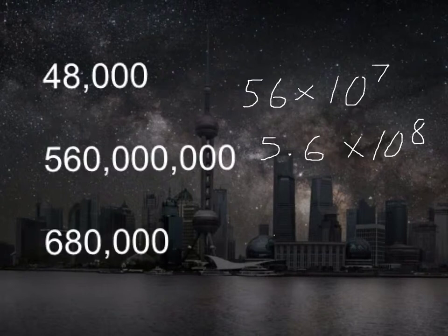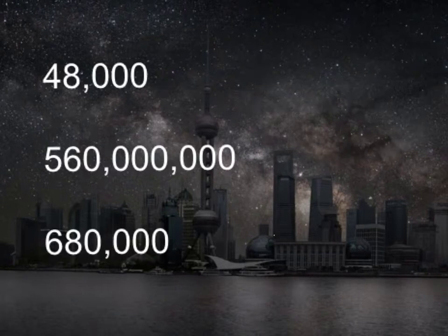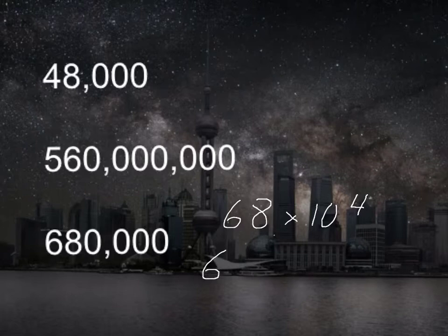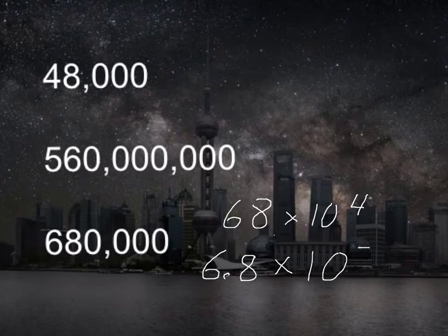This last one would be six hundred and eighty thousand, and you'd write that as sixty-eight times ten to the four. Or if you want to use the correct scientific notation here, it would be six point eight. So instead of just four zeros, again you go one more decimal over, and we'd have six point eight times ten to the fifth. But these numbers are the same — either way you write them, they're the same.